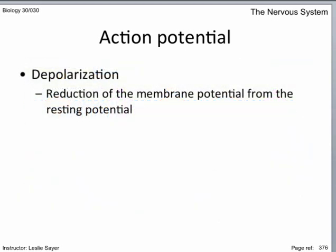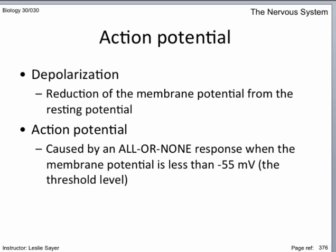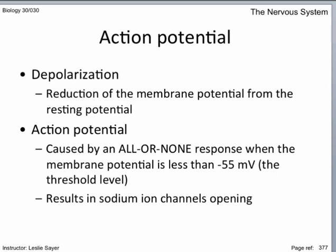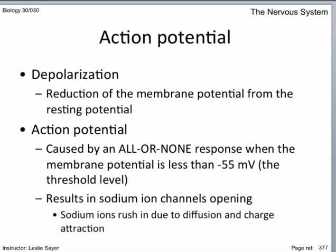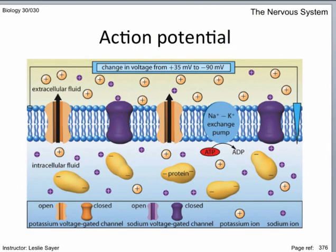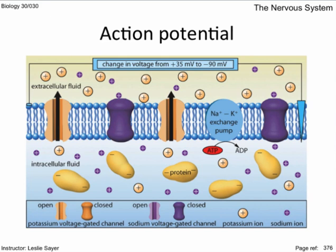In review: depolarization is the reduction of the membrane potential from the resting potential. An action potential is caused by an all-or-none response when the membrane potential is less than minus 55 millivolts, the threshold level. This results in sodium ion channels opening; sodium ions rush in due to diffusion and charge attraction. The change in membrane potential causes the sodium ion gates to close and the potassium ion gates to open. Potassium ions diffuse out, causing a momentary hyperpolarization of the membrane down to negative 90 millivolts. The sodium-potassium pump then works to restore polarity to the cell's resting potential, returning potassium ions to the inside and sodium ions to the outside.